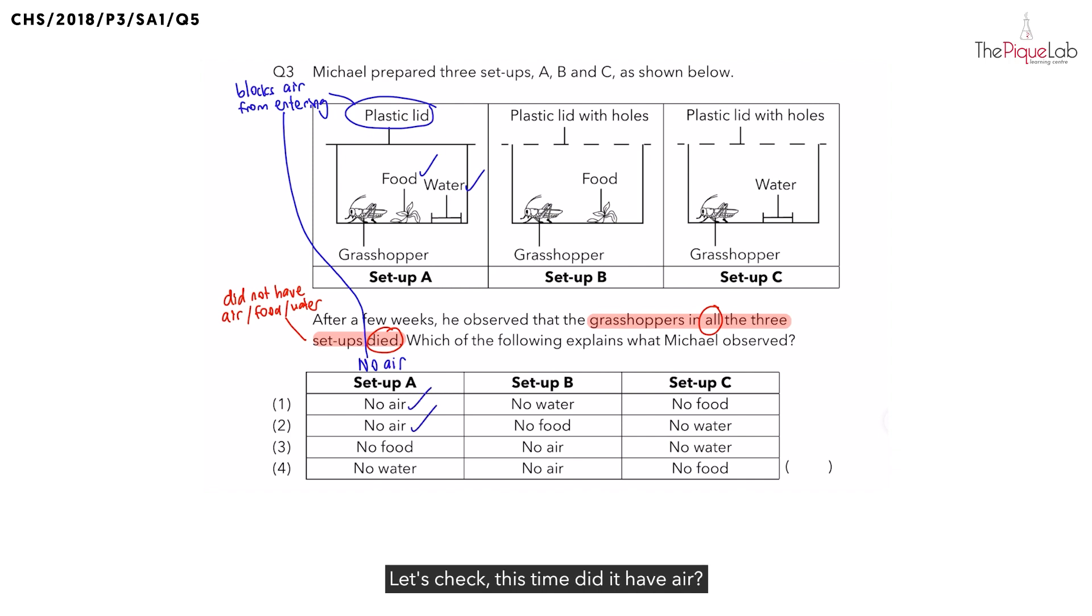Next, let's take a look for setup B. Let's check. This time, did it have air? Yes. How can you tell? The plastic lid covering setup B had holes in them. This time, do you think the air will be blocked? No. In fact, the air is able to enter through the holes. So, did the grasshopper in setup B have enough air? Yes. What about food? Also, yes.